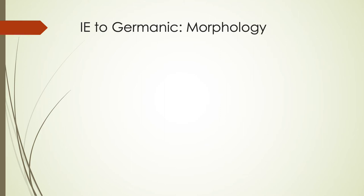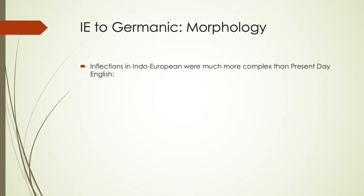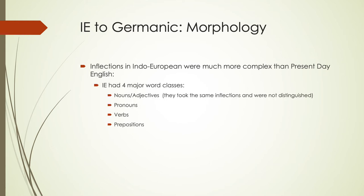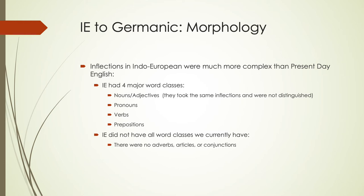Going from Indo-European to Germanic shows that there was a lot more morphology previously than we have today. Inflections in Indo-European were much more complex than in present-day English. In Indo-European there were four major word classes: nouns and adjectives were not really distinguished because they took the same inflections; and there were also pronouns, verbs, and prepositions. There's no evidence of adverbs, articles, or conjunctions having existed.